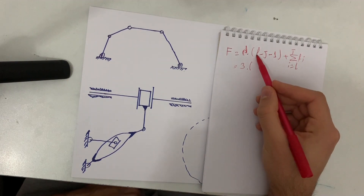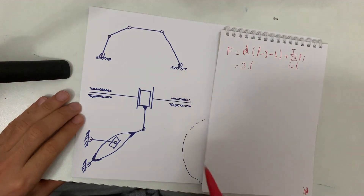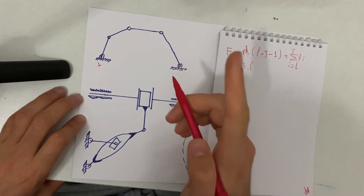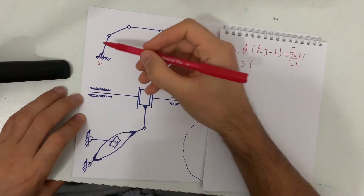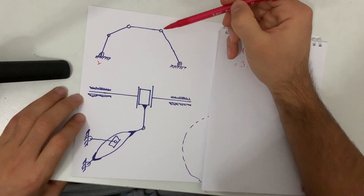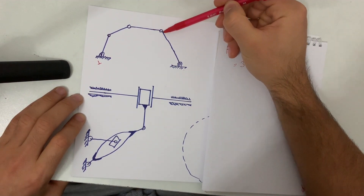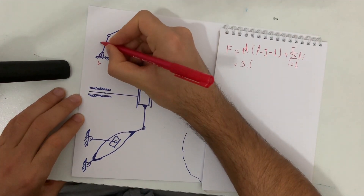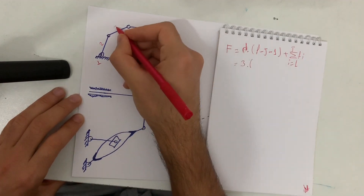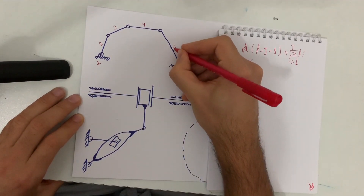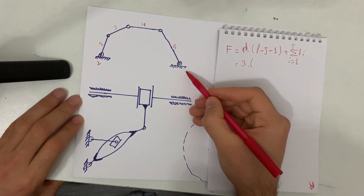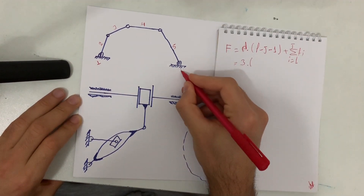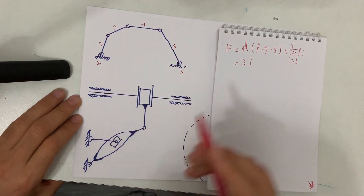Now let's find the links. Every time, always write down 1 for the ground — we count the ground as one link. The dots represent revolute joints, and at each dot a new link begins. So we have: ground (link 1), then links 2, 3, 4, and 5. The ground at the other end is the same link, so we still have L = 5 links total.